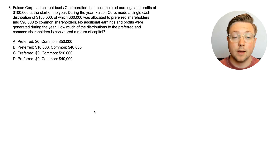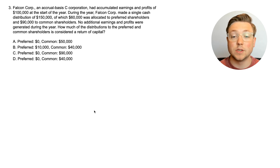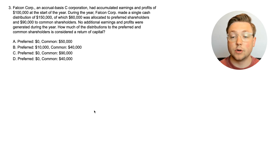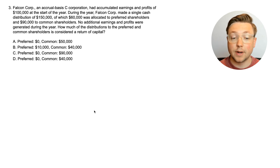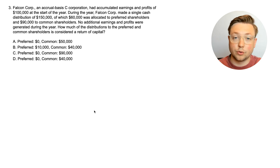Here we are at question three. Falcon Corp, an accrual basis C-Corporation, had accumulated earnings and profits of $100,000 at the start of the year. During the year, Falcon Corp made a single cash distribution of $150,000, of which $60,000 was allocated to preferred shareholders and $90,000 to common shareholders. No additional earnings and profits were generated during the year. How much of the distributions to the preferred and common shareholders is considered a return of capital?